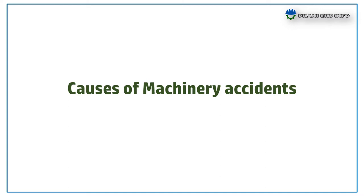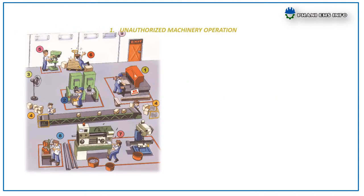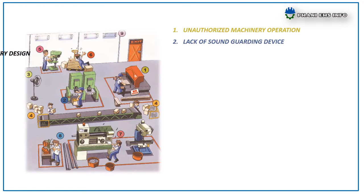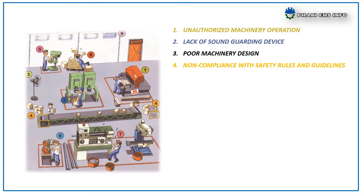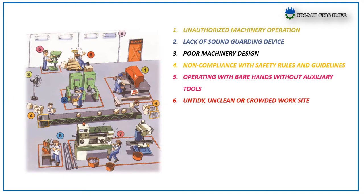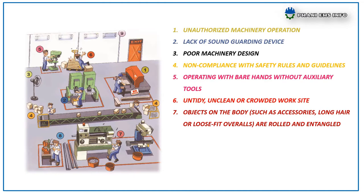The causes of machinery accidents are: unauthorized machinery operation, lack of sound guarding device, poor machine design, non-compliance with safety rules and guidelines, operating with bare hands without auxiliary tools, untidy, unclean or crowded worksite, objects on the body such as accessories, long hair or loose-fit overalls that get rolled and entangled, not using proper personal protective equipment, and poor illumination.